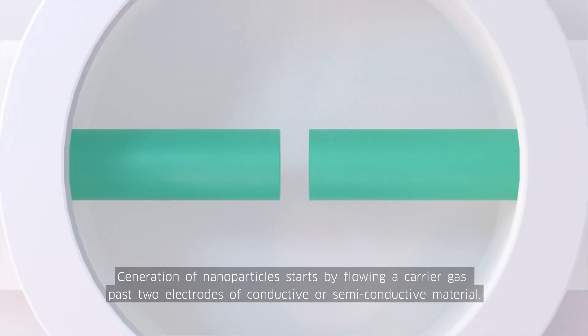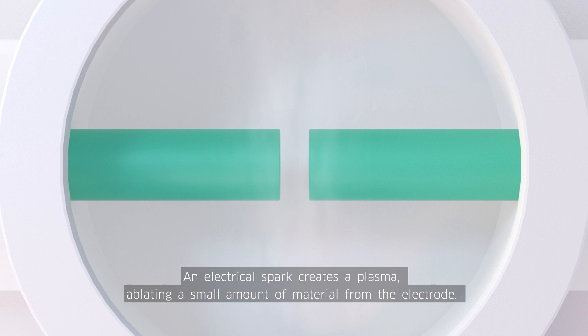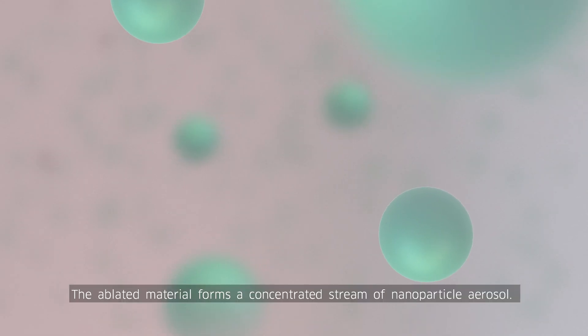Generation of nanoparticles starts by flowing a carrier gas past two electrodes of conductive or semi-conductive material. An electrical spark creates a plasma, ablating a small amount of material from the electrode. The ablated material forms a concentrated stream of nanoparticle aerosol.